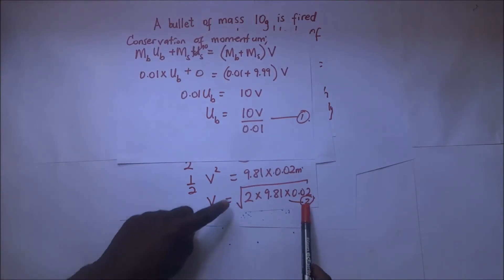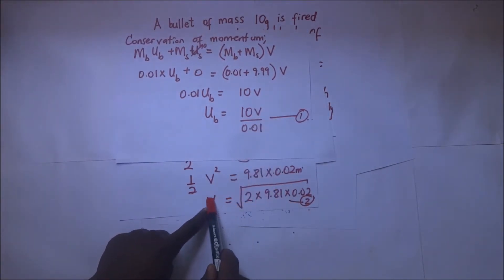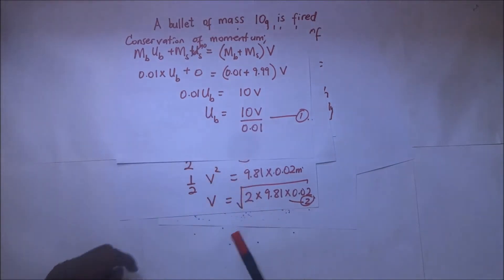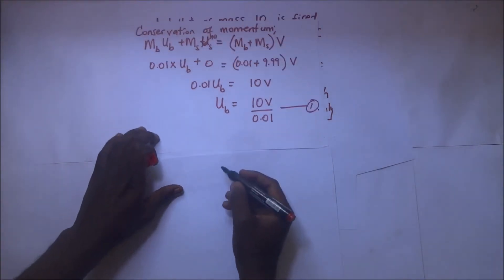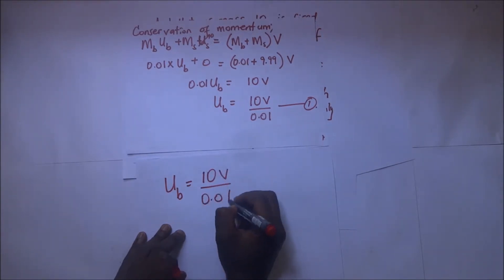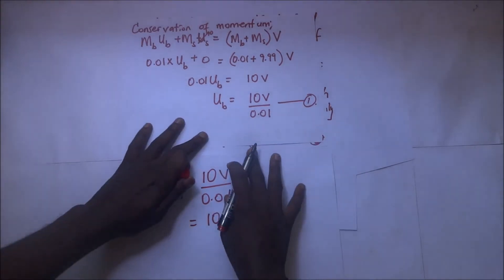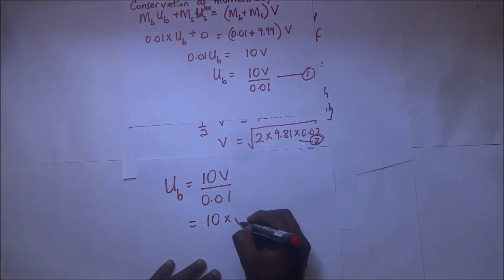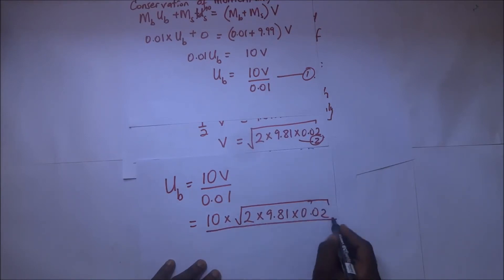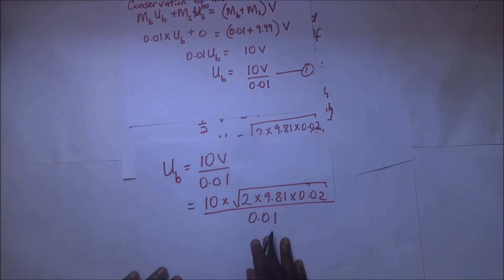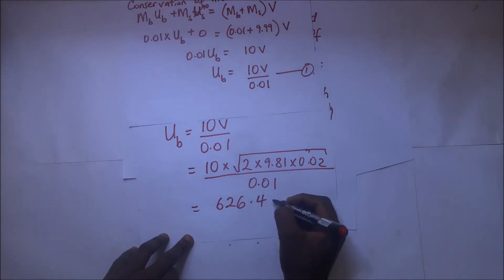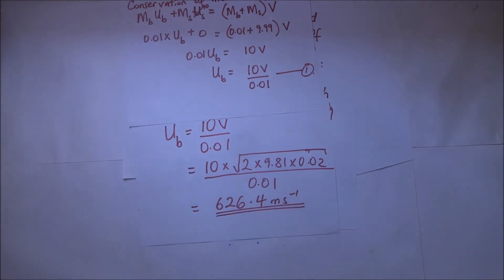Looking at our first expression, we do not have V explicitly. So we substitute the value of V from the second expression into the first. The initial velocity of the bullet becomes: u_b = (10 / 0.01) × √(2 × 9.81 × 0.02). From that expression we get our final answer of approximately 626.4 meters per second — the initial velocity of the bullet.